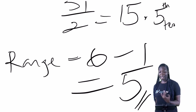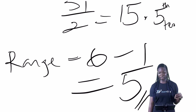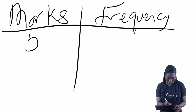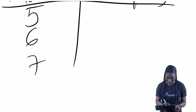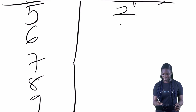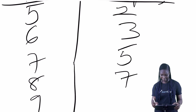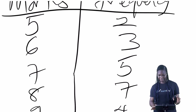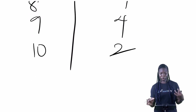Now the table below shows the marks obtained in a mathematics test. Find the mode, range, and median. We have marks and frequency. The marks are: 5, 6, 7, 8, 9, and 10, with frequencies: 2, 3, 5, 7, 4, and 2. Now, what is the mode? The mode is 8 because it occurs 7 times.